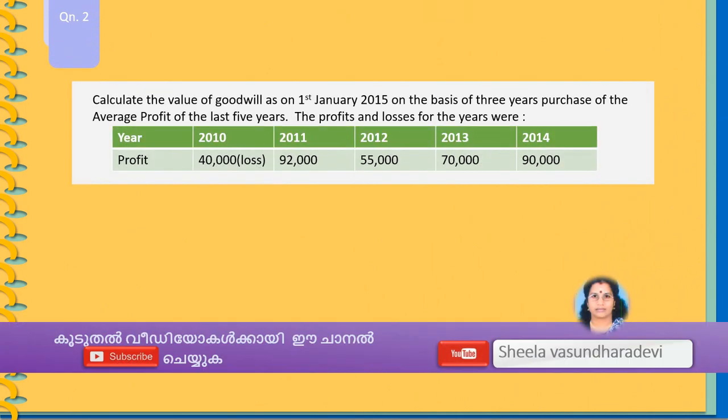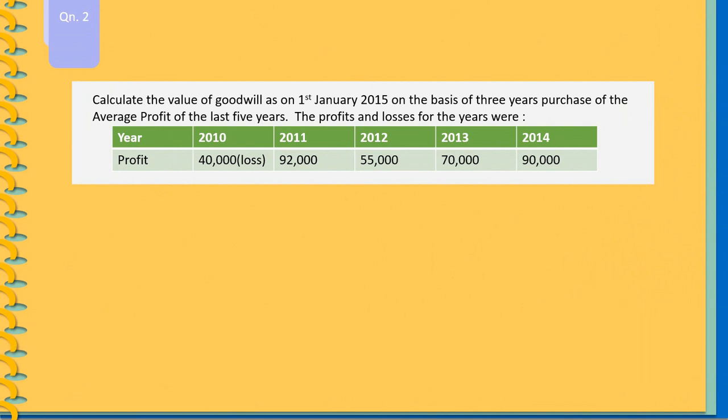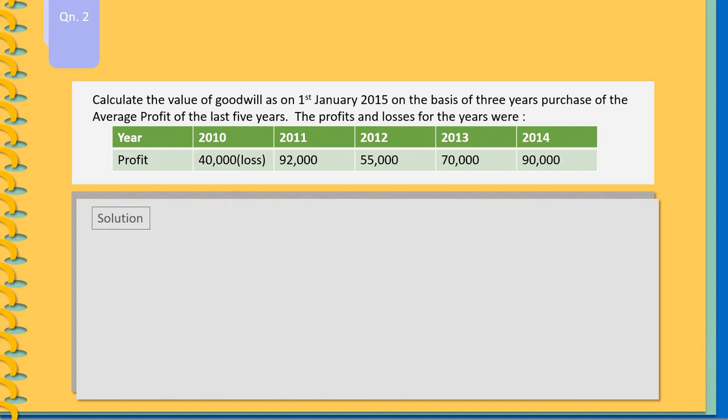Question 2: Calculate the value of goodwill as on 1st January 2015 on the basis of 3 years purchase of the average profit of the last 5 years, based on the profit and loss of those years.